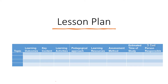On the lesson plan you have the topic — that topic could be a module or just a topic you have presented — then you have the learning outcomes. Take some time to look through the table. You can see the topic, learning outcomes, key content, learning activities, pedagogical approach, learning resources, assessment method, estimated time of study, and person responsible. This table is similar to the one we just walked through, so you are expected to work through all of this, bring in your content, and fill it in.